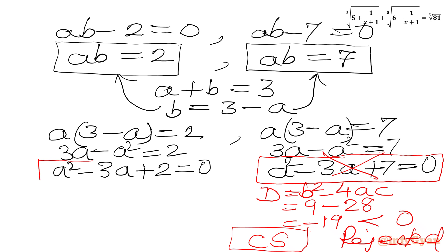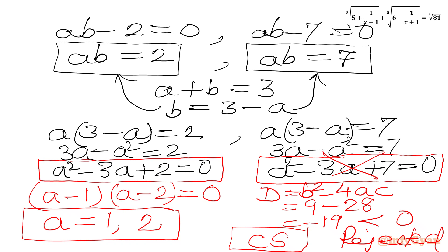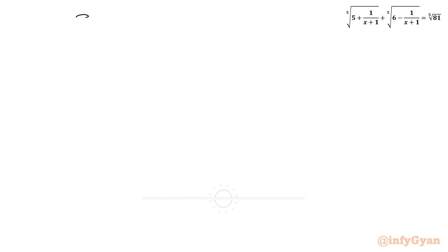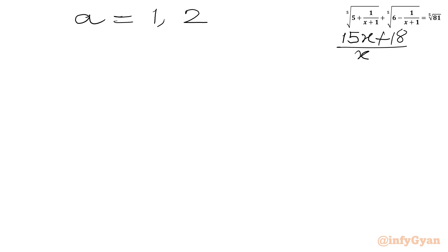Now considering the first quadratic with ab = 2: a(3 - a) = 2, giving a² - 3a + 2 = 0. The factors of 2 are 1 times 2, so we split the middle term as -a - 2a, giving (a - 1)(a - 2) = 0. From the zero product rule, a = 1 or a = 2. Computing a^5: 1^5 = 1 and 2^5 = 32.